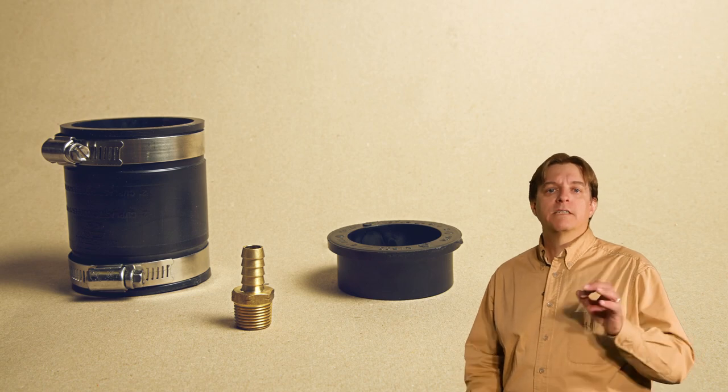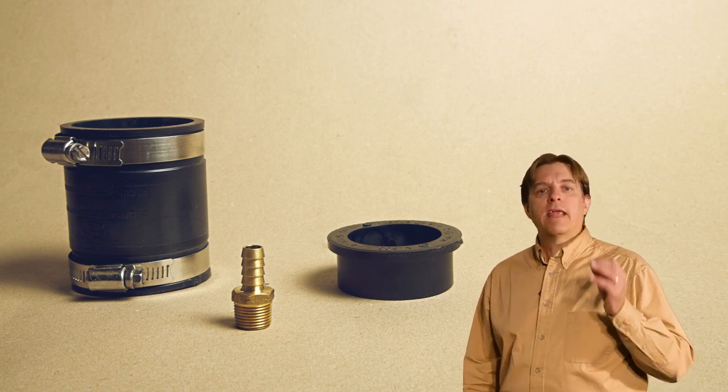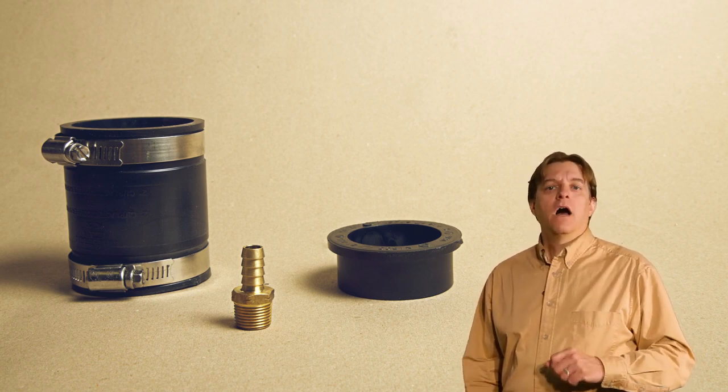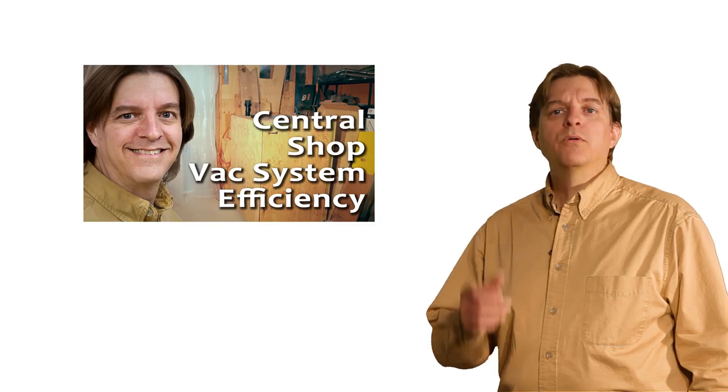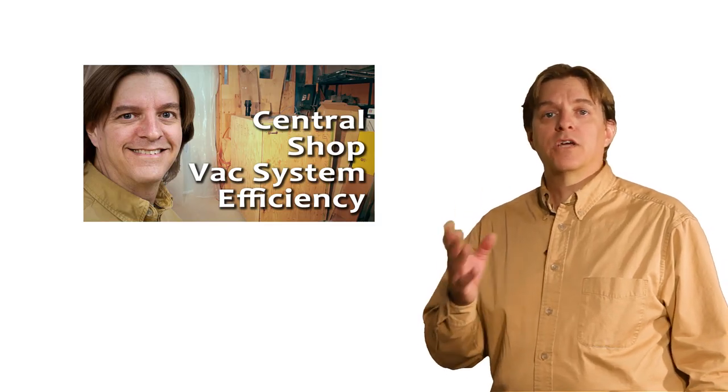Depending on your vacuum source, you may need to make an adapter for the tubing. For my shop vac, I used a flexible connector and plug found in the ABS area of the plumbing aisle, along with a prong tubing to MPT brass fitting. I'll put this to use in a follow-up video for the shop vac system.